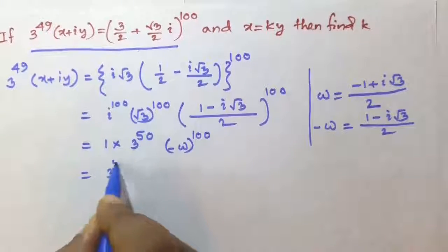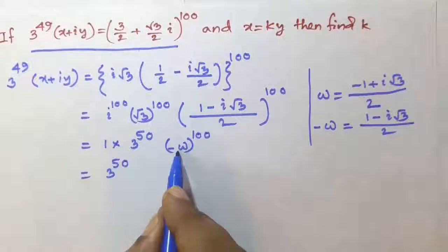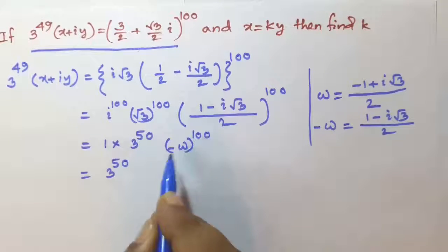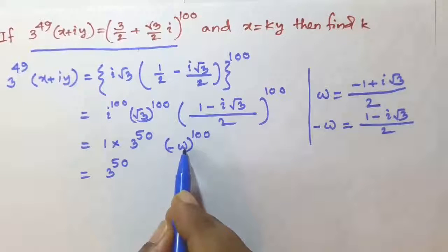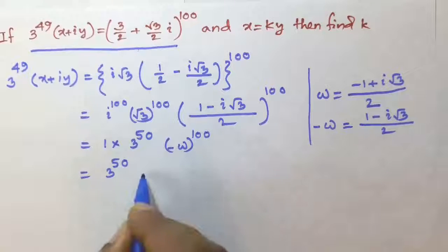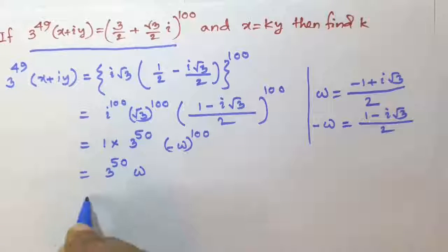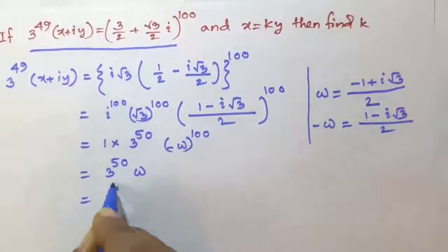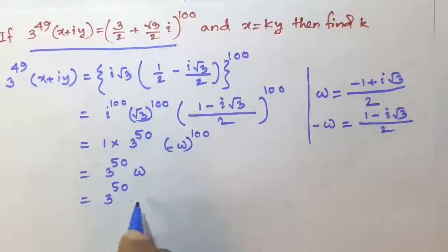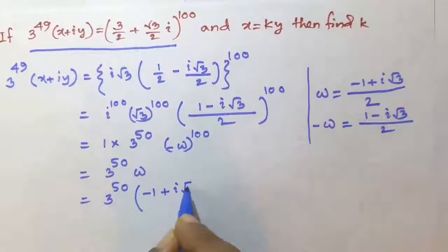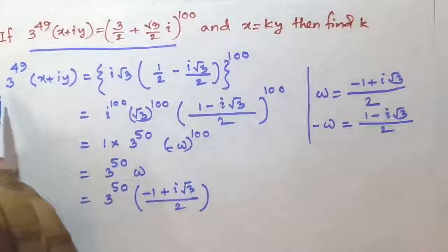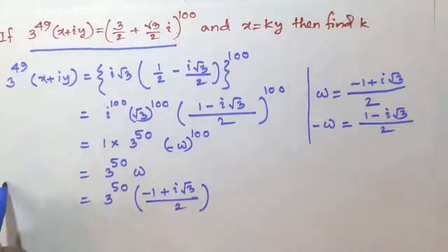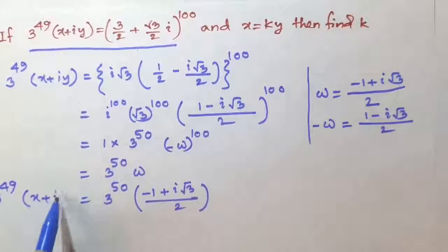So, 3 to the power 50 into omega to the power 100, minus 1 to the power 100 is equal to plus 1. So, omega to the power 100 means omega. So, 3 to the power 50 into omega is equal to minus 1 plus i root 3, whole divided by 2. This is equal to 3 to the power 49 into x plus iy.